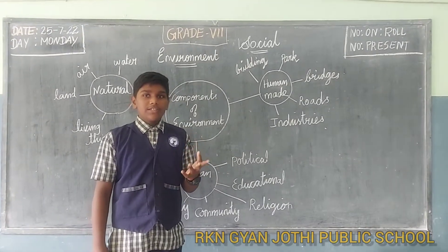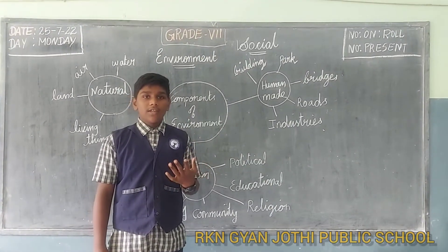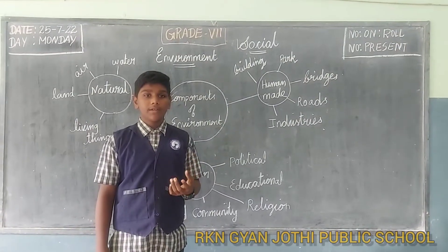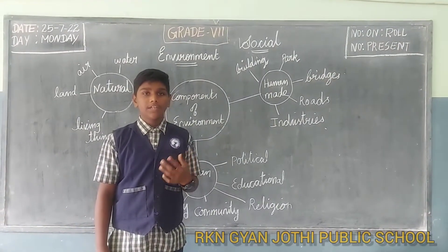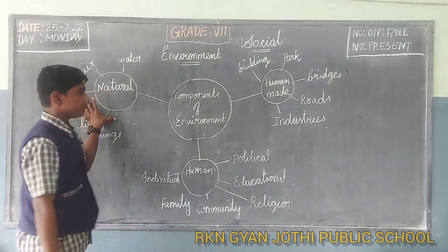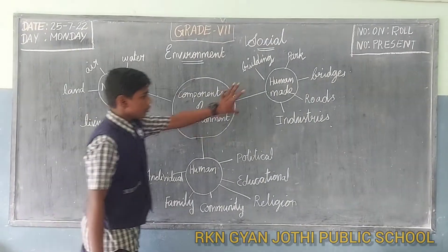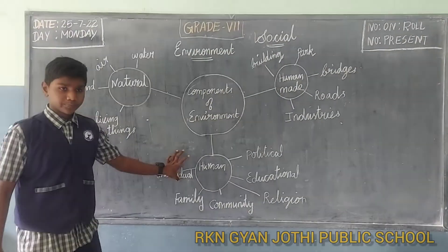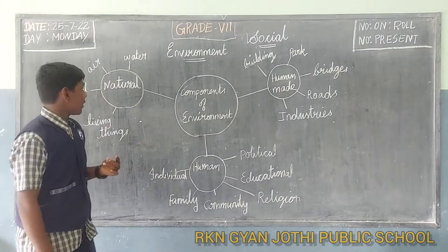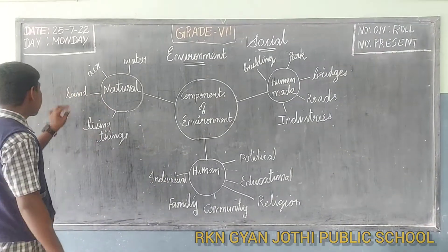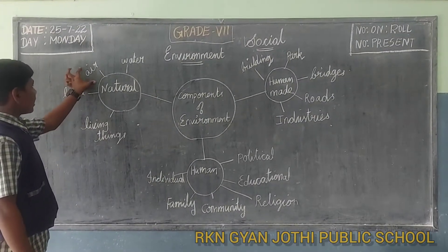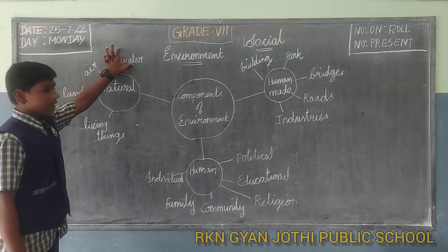Now let's see what are the components of environment. There are three types of components: natural, human made, and human. Natural environment comprises land, living things and underwater.